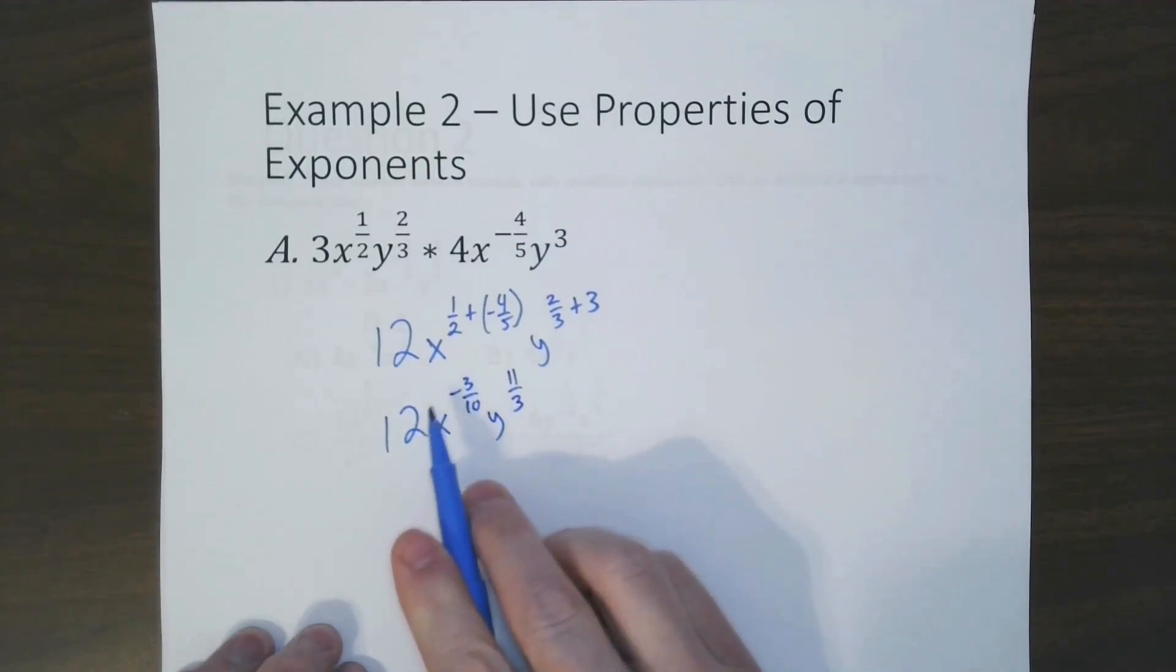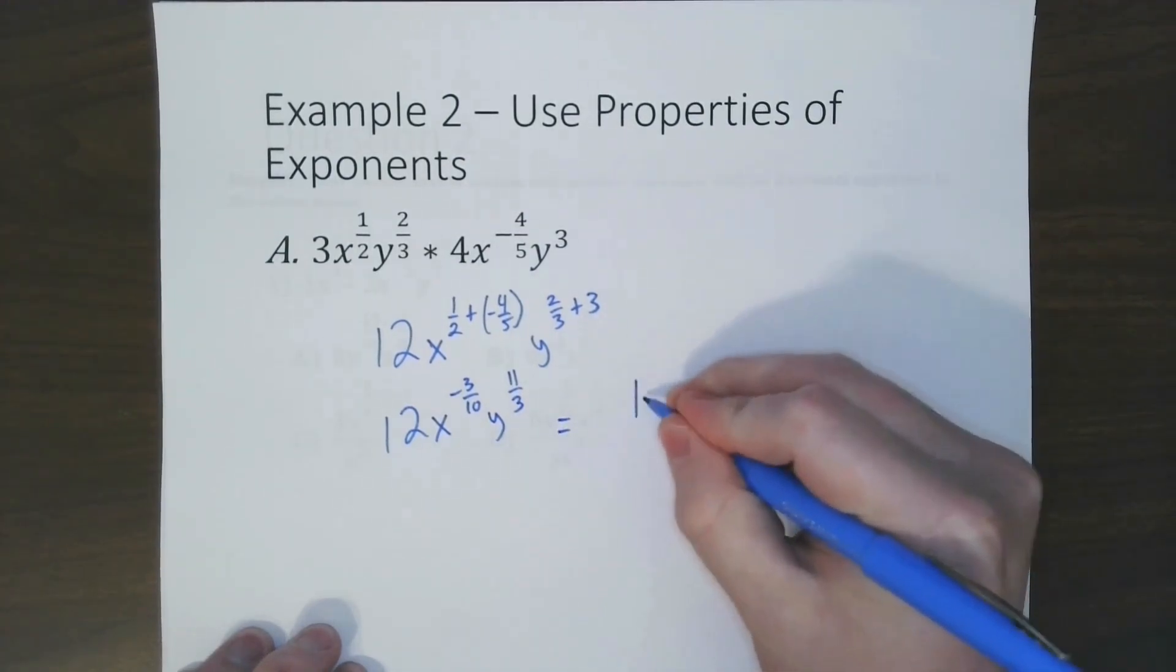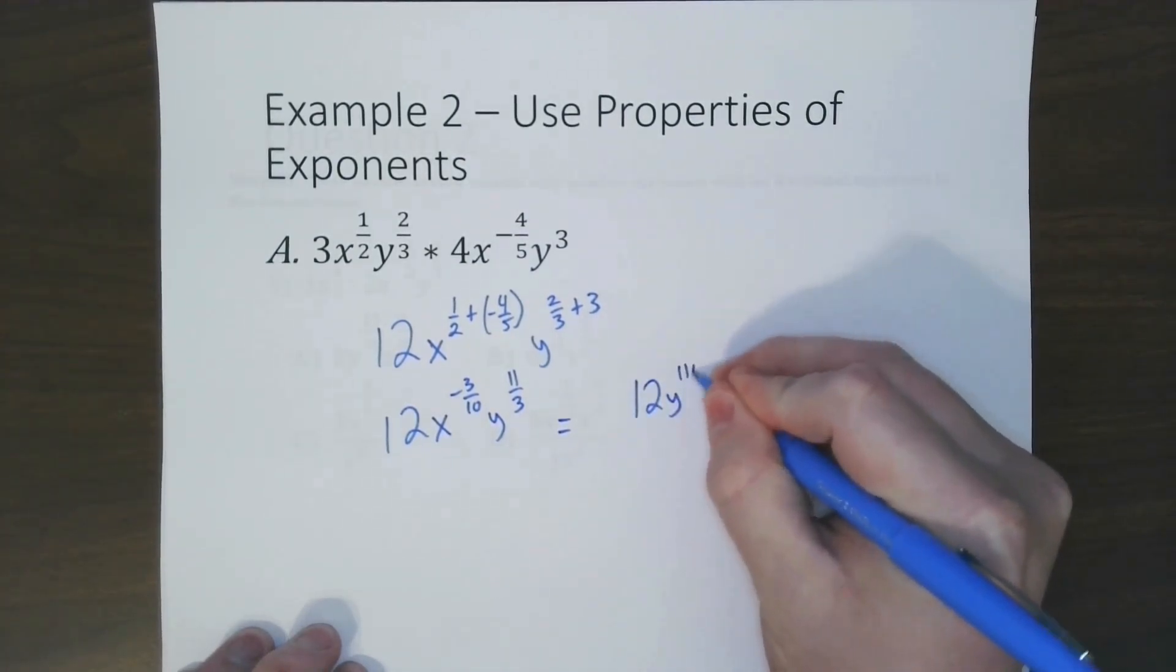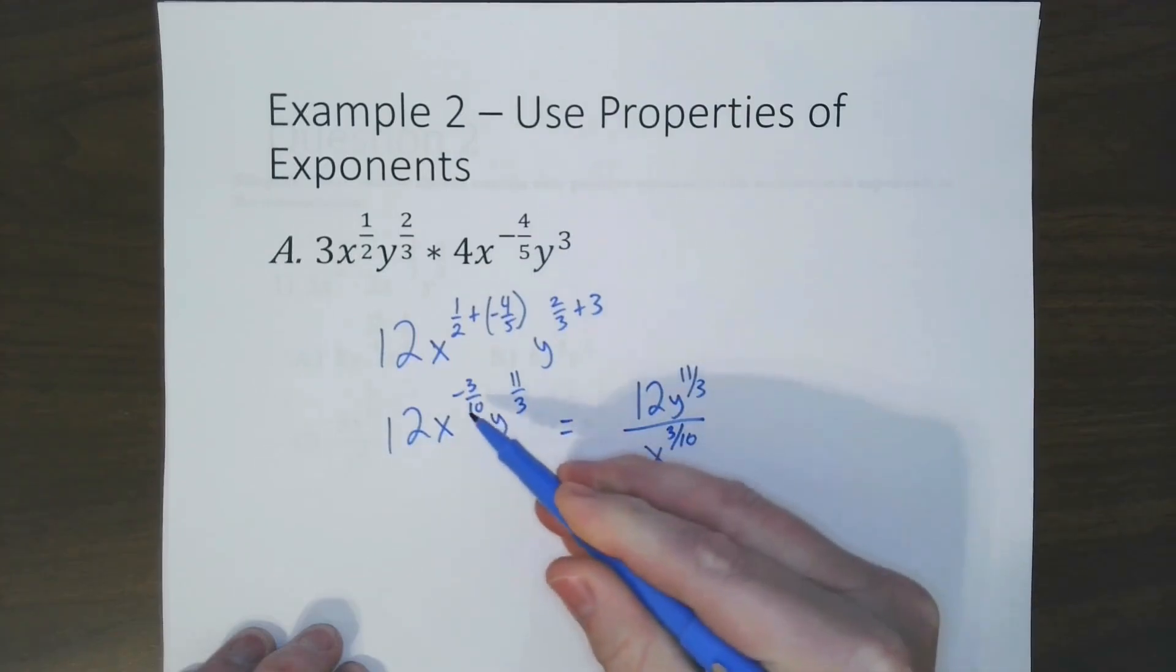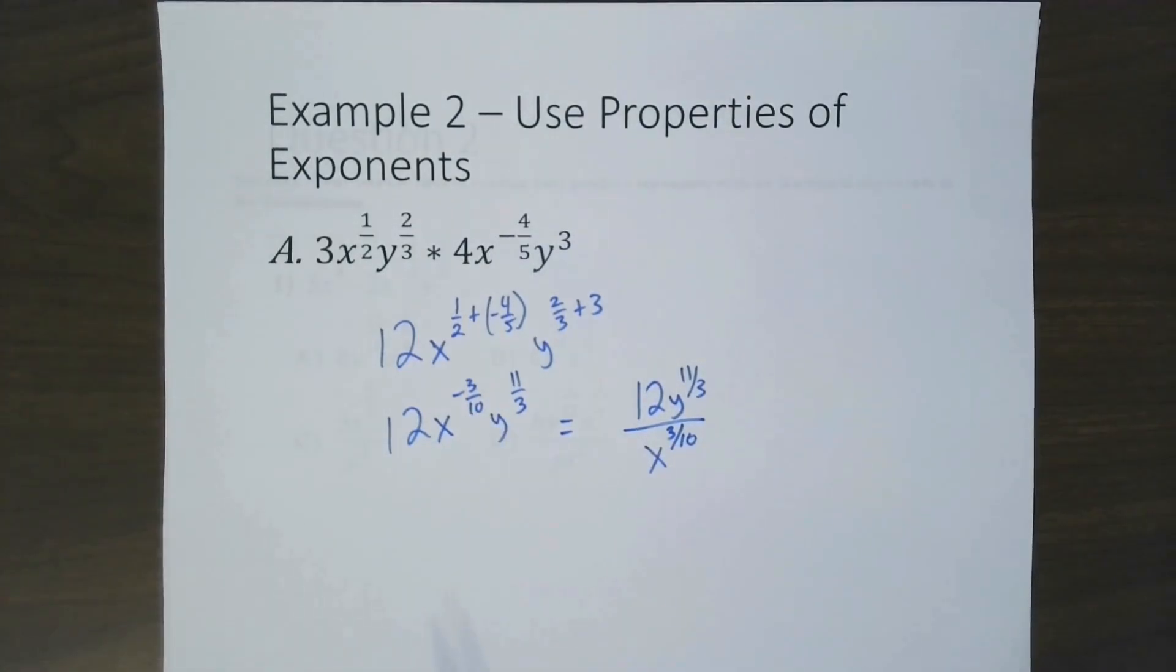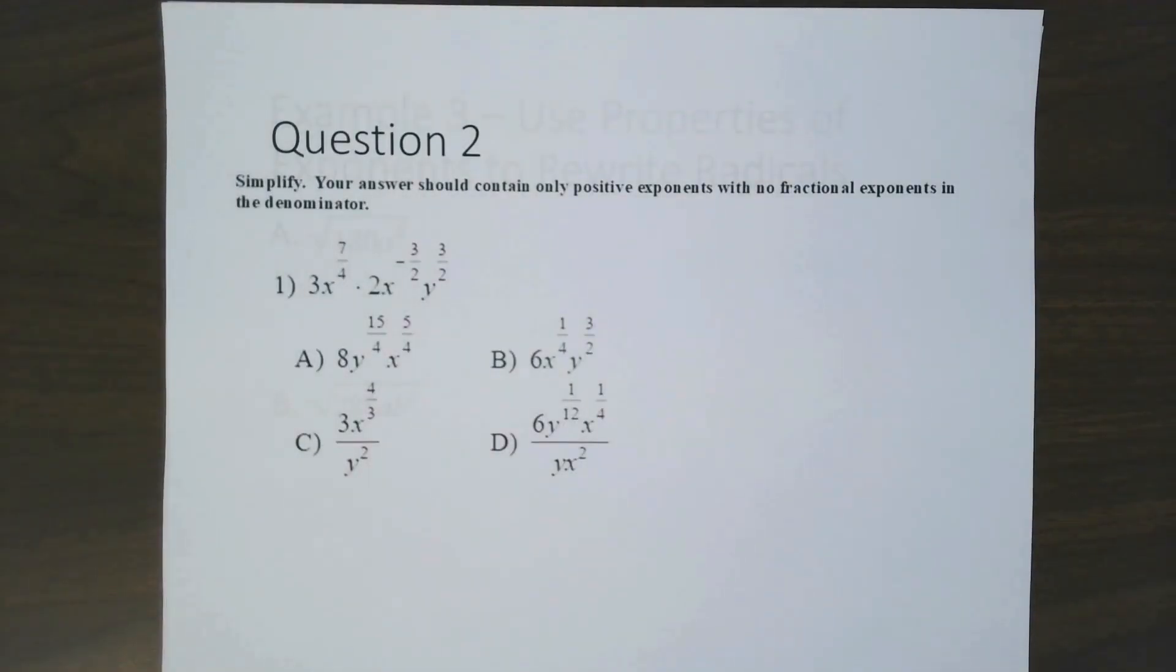If you notice, we have a negative exponent here, which means we have to move it to the denominator. So our final answer is 12y to the 11/3 over x to the positive 3/10. When you move it from here to the bottom, it becomes positive. Go ahead and try this problem.